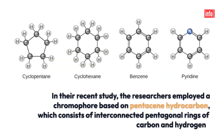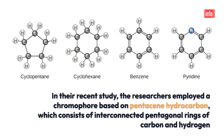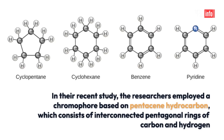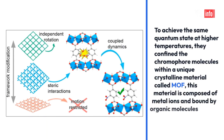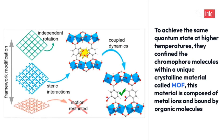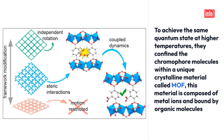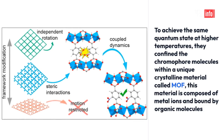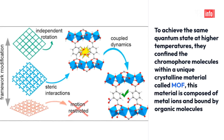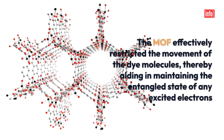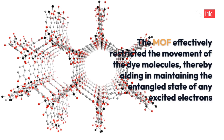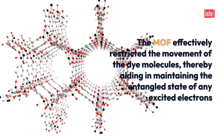In their recent study, the researchers employed a chromophore based on pentacene hydrocarbon, which consists of interconnected pentagonal rings of carbon and hydrogen. To achieve the same quantum state at higher temperatures, they confined the chromophore molecules within a unique crystalline material called metal-organic framework. This material is composed of metal ions and bound by organic molecules. The metal-organic framework effectively restricted the movement of the dye molecules, thereby aiding in maintaining the entangled state of any excited electrons.